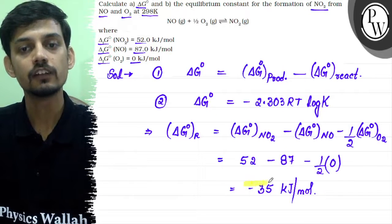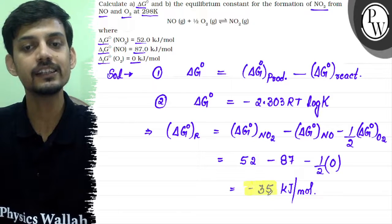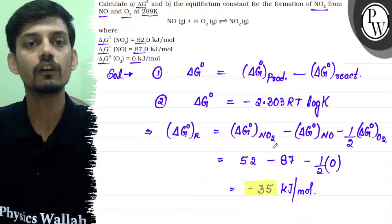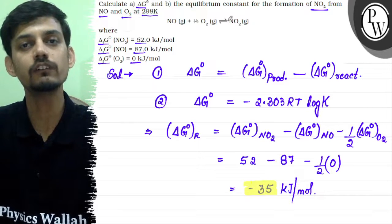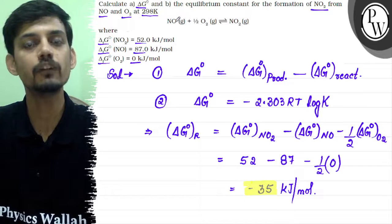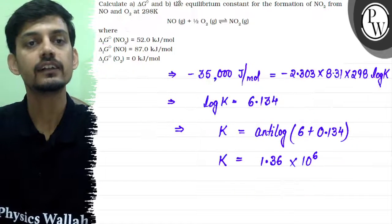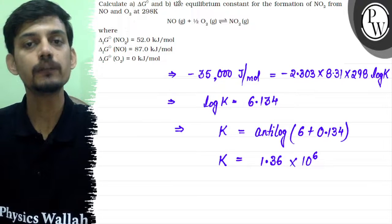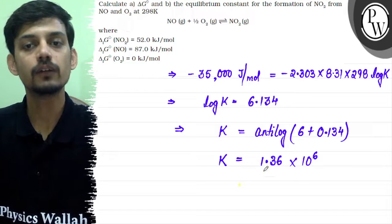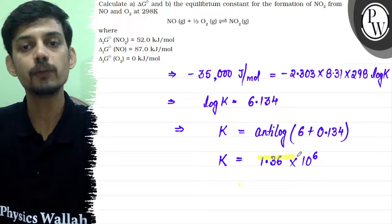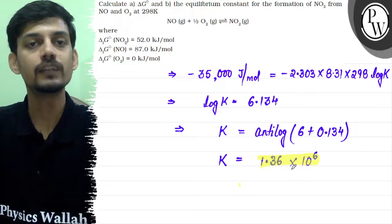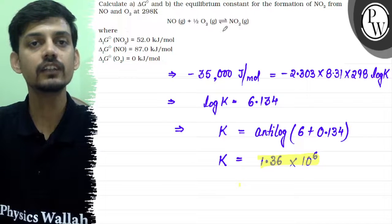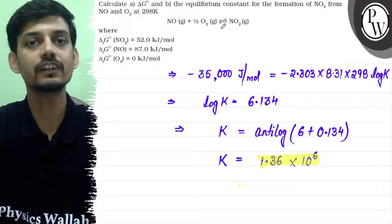The first part of the answer is ΔG° = −35 kilojoule per mole of NO₂. The equilibrium constant K is 1.36 × 10⁶. Hope this clears the question. Best of luck. Thank you.